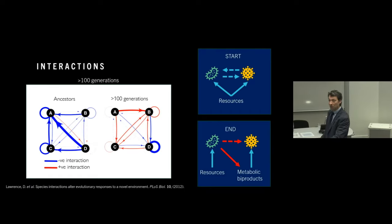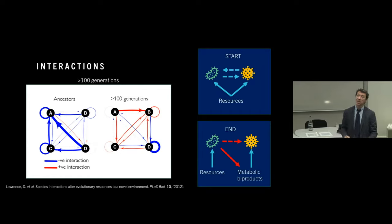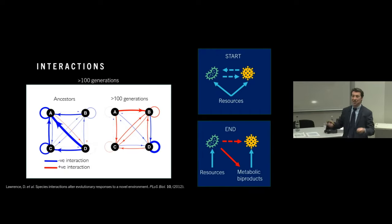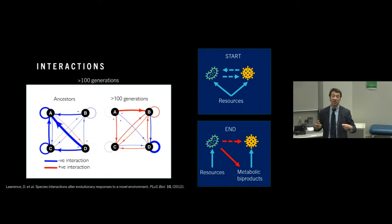But by the end of the experiment, after 100 generations or more, these have not only adjusted their physiology, but they have evolved. And they have evolved in such a way that they're now predominantly either helping each other or ignoring each other. And we've done quite a lot of work trying to figure out what's happening here. And we think what's happening is that at the start of the experiment, they're competing for resources. They're all, if you put a little bit of sugar into the environment, everything likes sugar, and so everyone uses it up. And in that way, they're inhibiting each other.